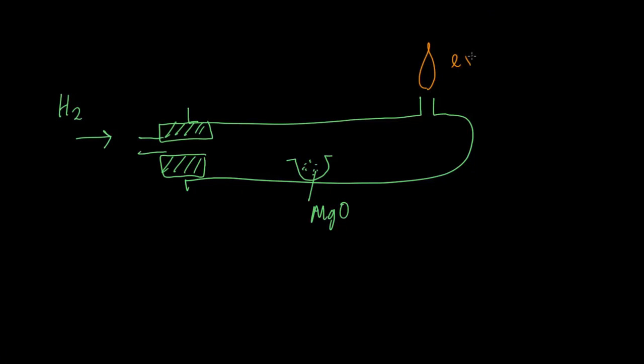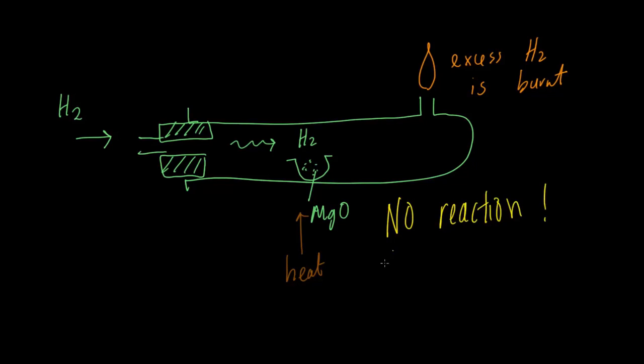The excess hydrogen is burnt. The magnesium oxide will not react with hydrogen gas if it's cold, so you have to heat it up. We allow hydrogen gas to flow through very hot magnesium oxide and we wait, but there is no reaction. If there is no reaction, it means that magnesium is more reactive than hydrogen.